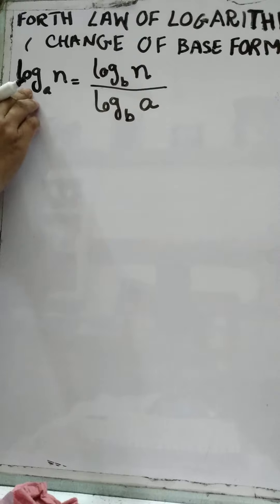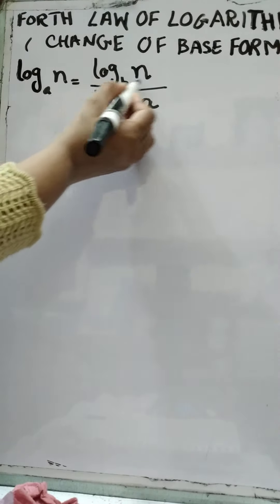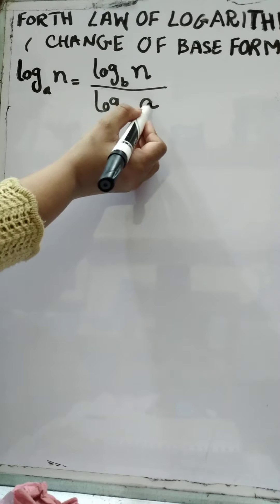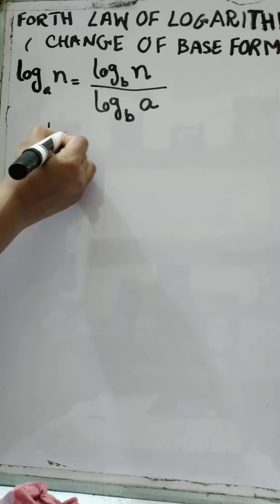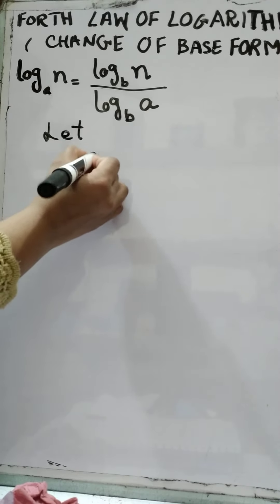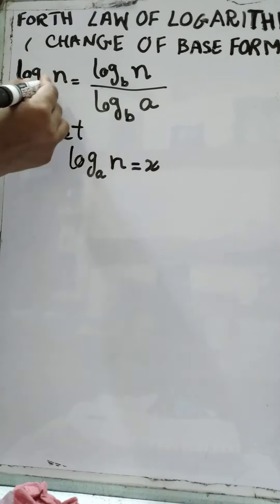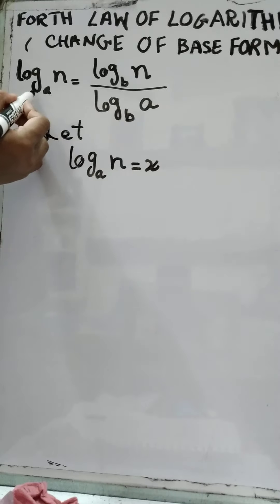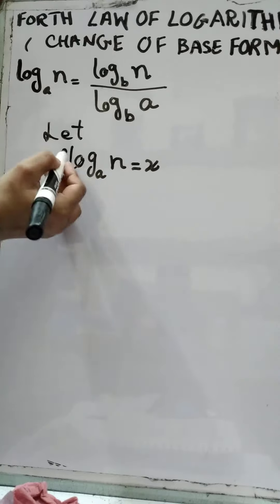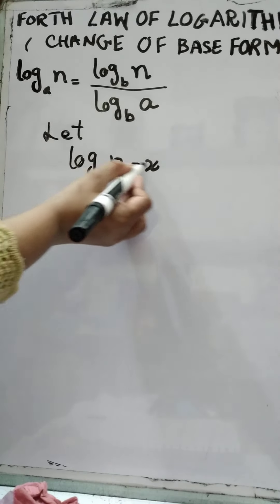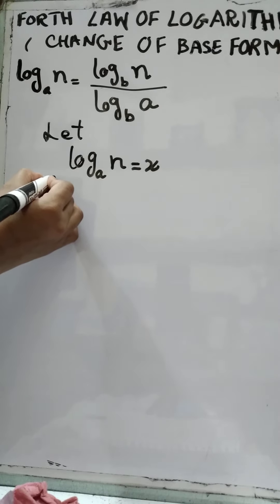Now we are going to prove that log base a of n is equal to log base b of n over log base b of a. We will let this value equal to x — that is, let log base a of n equal to x. We will convert this value into exponential form.